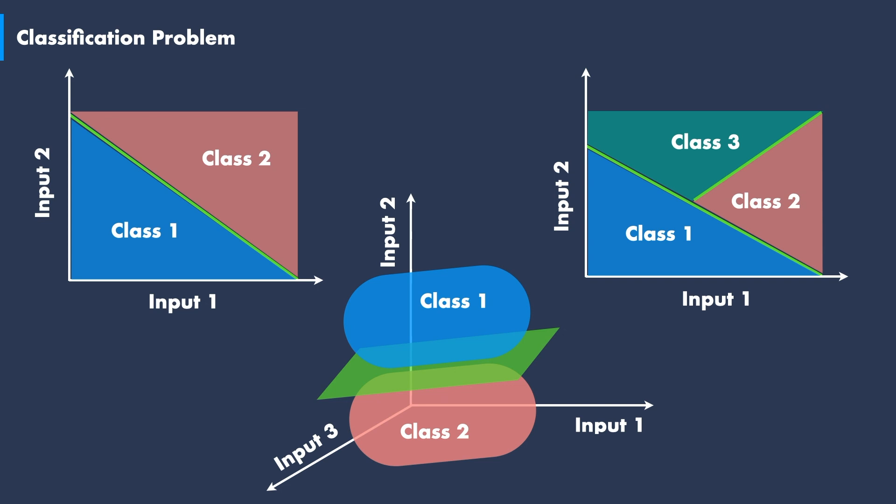We have seen that data can be separated into different classes using linear and non-linear borders. Before we start diving into classification and deep learning, however, we will introduce important nomenclature that we will be using throughout this series.